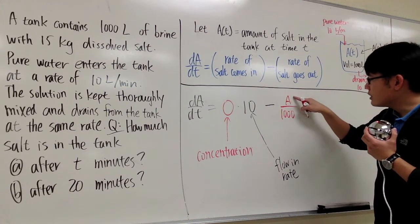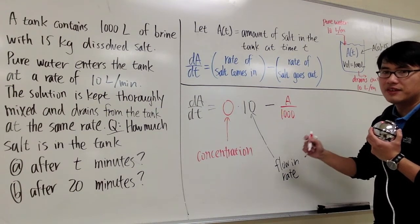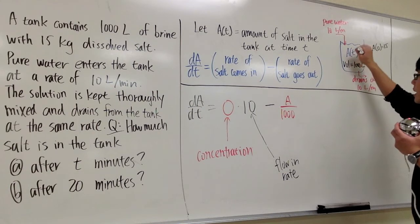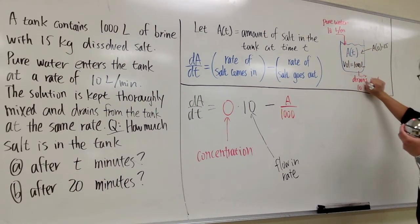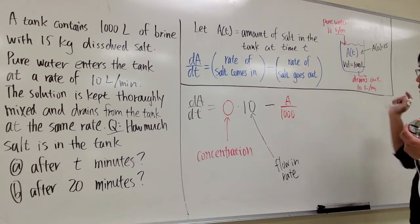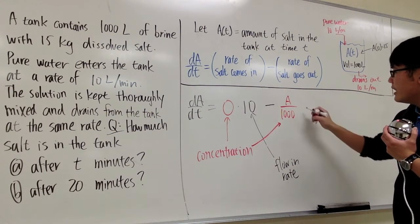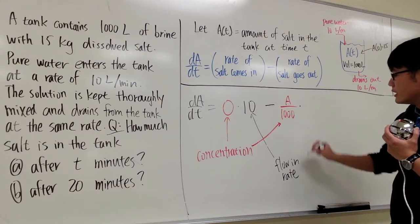So we do A over 1,000. Once again, amount divided by the volume. That gives us the concentration. And we care about the concentration in the tank because we care about to drain out the solutions from the tank. That's how we do that. And as you can see, that's pretty much the concentration.